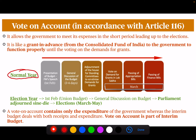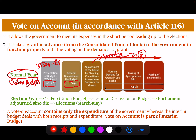In a normal year, the union budget is presented by the Finance Minister of India on 1st February. On 31st January, the economic survey comes out, and on 1st February the budget is presented. Then there is a general discussion for 3 to 4 days. After that, Parliament adjourns for 3 to 4 weeks, during which the 24 Parliamentary Standing Committees will scrutinize it. Then in March, Parliament sits again for the vote on demand for grants, followed by the passing of the appropriation bill and the finance bill. This is the process in a normal year.